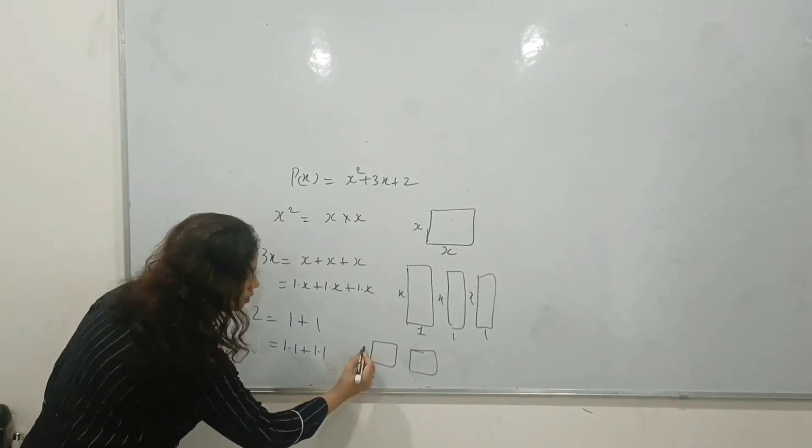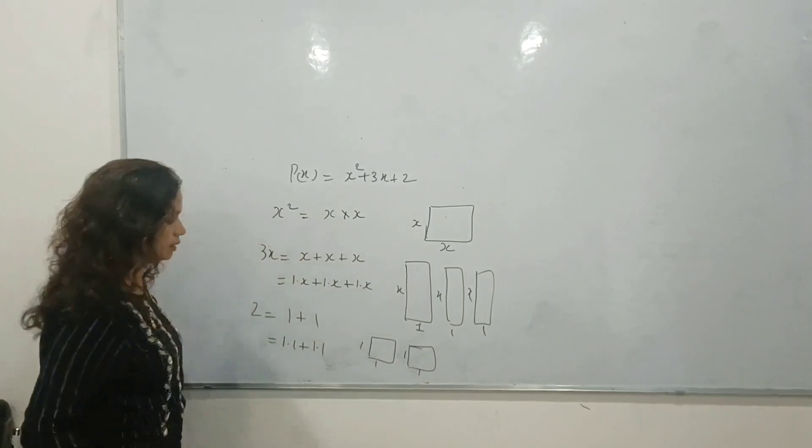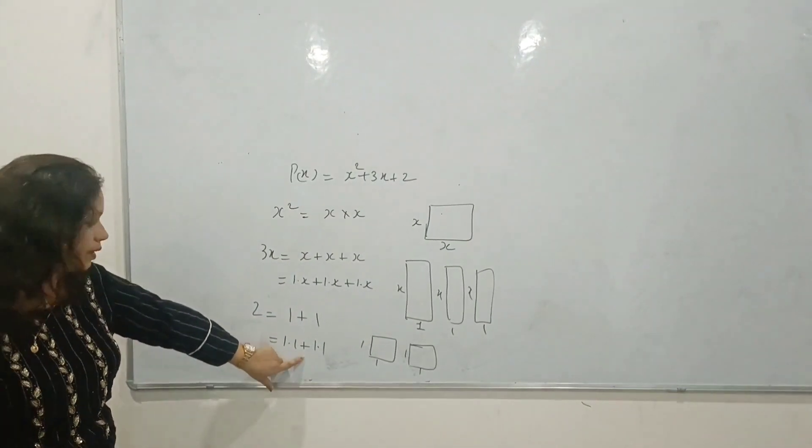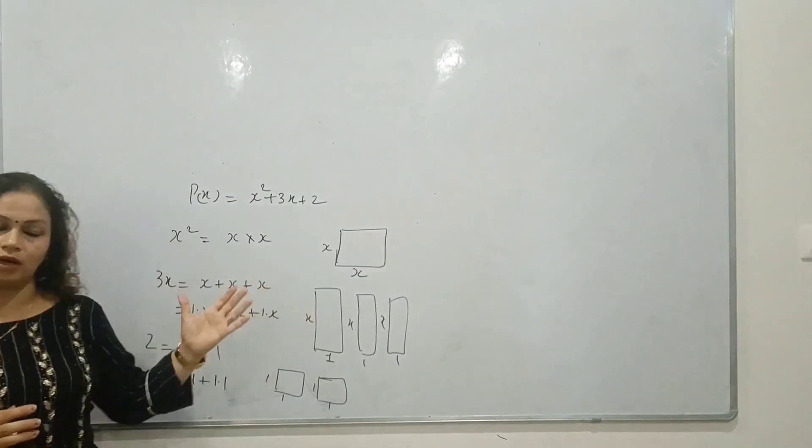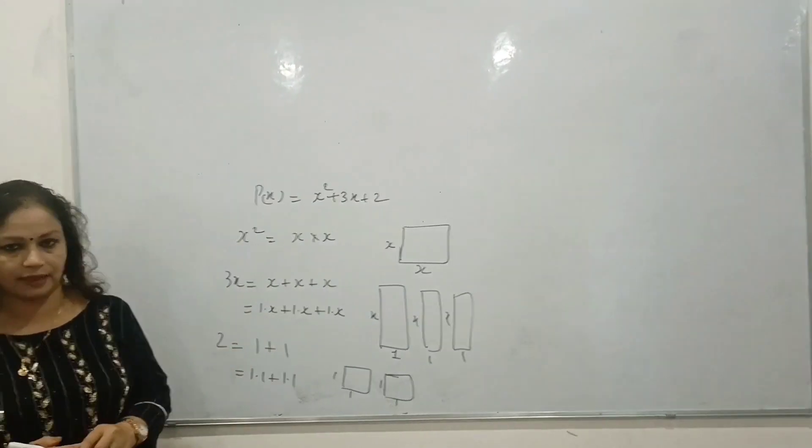We will make two small squares: 1 times 1 and 1 times 1. The area of the square is 1 times 1. So 2 is the area of the two squares. It is figured in the form of squares and rectangles.